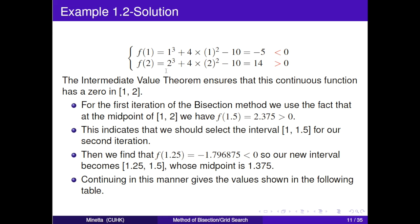Here are the specific solutions. First, we check if there is a zero. By calculation, we know that f(1) is less than 0 and f(2) is larger than 0. By IVT, we ensure that this continuous function has a zero in interval [1, 2]. Then, for the first iteration, we have that f(1.5) is larger than 0. This indicates that we should select the interval [1, 1.5] for our second iteration. Then we find that f(1.25) is less than 0. So, continuing in this manner, we can get the following table.